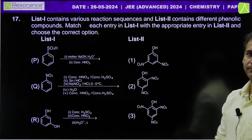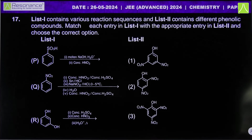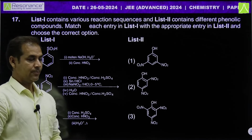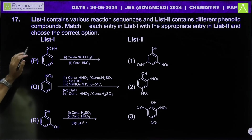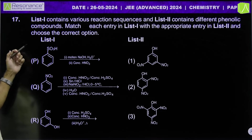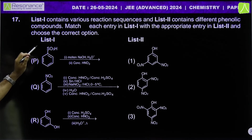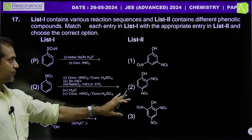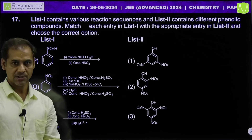Let's move to the next matching type question. List 1 has reactants with reagents (3-5 reagents each), List 2 has products. Each reaction has multiple reagents designed to consume time. The key: do not do excessive paper work — apply reagents mentally and find the product.